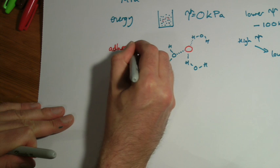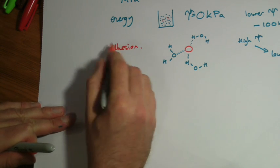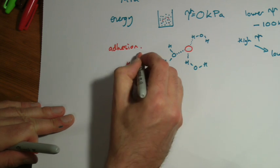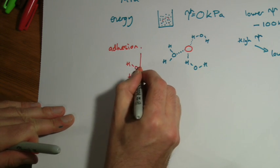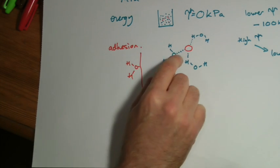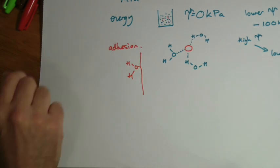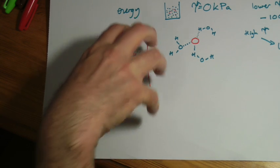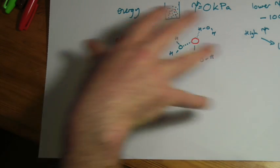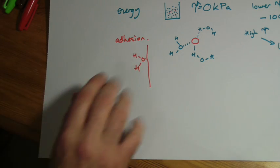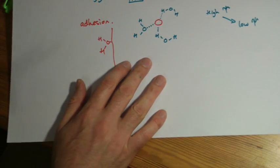When we talk about xylem and we talk about water molecules sticking to the sides of the xylem, we're forming bonds. That's what it's doing. So that's going to lower the water potential as well. That is in there as a component of water potential as well, as is what's called pressure potential.